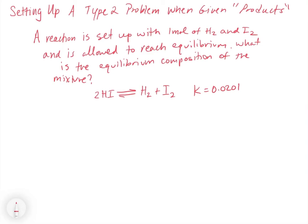So this is kind of the caveat now. Let's take a look at a possible problem that you might encounter, which turns out not to really be a problem, but just a matter of understanding things. This says: setting up a type 2 problem when given quote-unquote products. In this question, it says a reaction is set up with one mole of H₂ and one mole of I₂ and is allowed to reach equilibrium. What is the equilibrium composition of the mixture? Now here's the problem. The way this equation is written, the H₂ and the I₂, the information that you're being given about, are products in this case, not reactants.